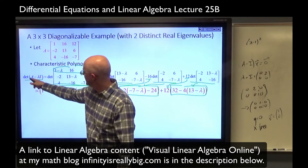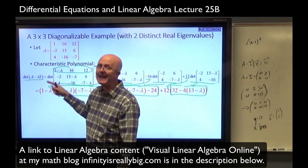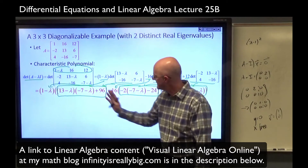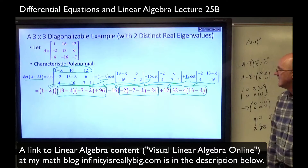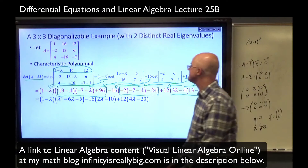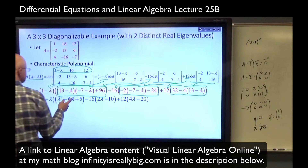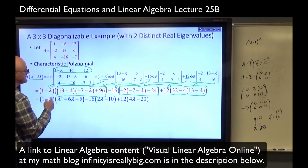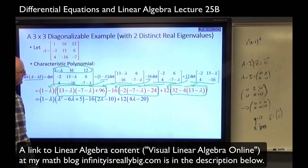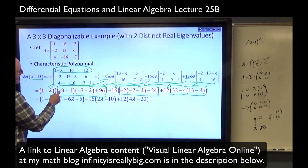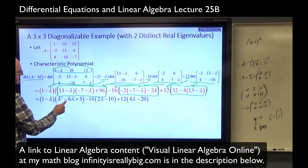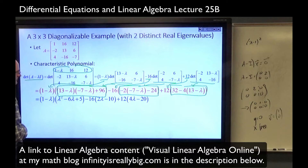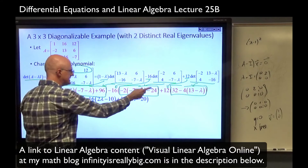You can actually do the determinant of lambda I minus A instead, and in that case the characteristic polynomial would be the opposite sign, but they still have the same roots. Now just simplify: multiply out. 13 times negative 7 is negative 91, and negative 91 plus 96 is 5 — that's where the 5 comes from. We have negative 13 lambda and positive 7 lambda, giving negative 6 lambda. And negative lambda times negative lambda is lambda squared.